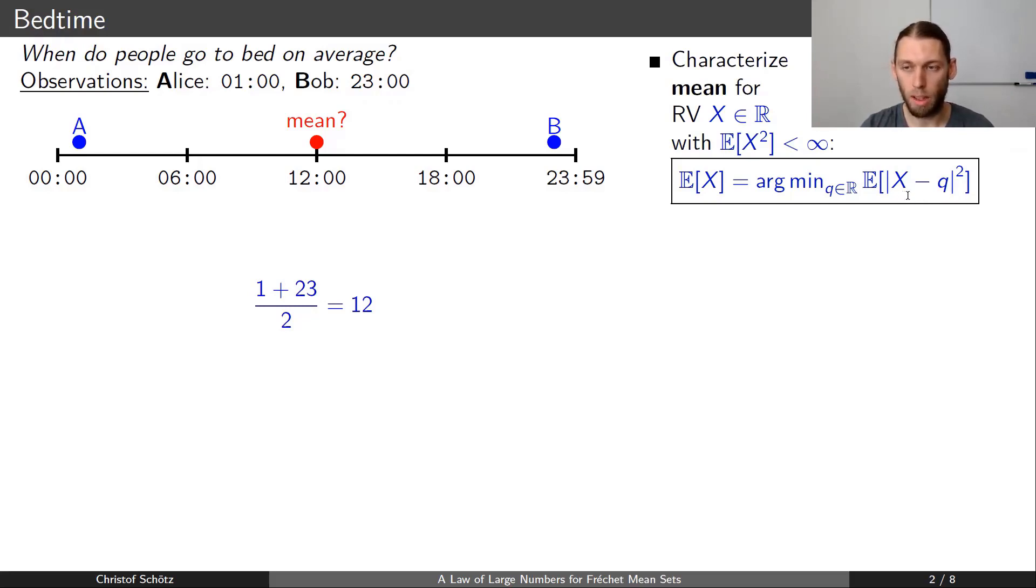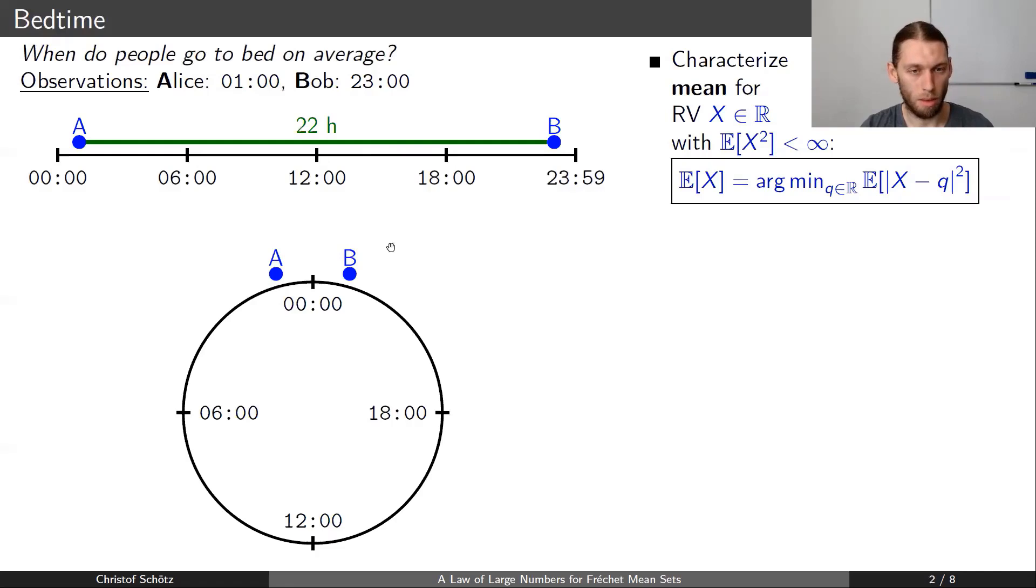And here this distance is the Euclidean distance, and applying this Euclidean distance on the left hand side is to say that the distance between a, one hour after midnight, and b, one hour before midnight, is 22 hours. This seems to be wrong somehow because we would say something different—we would say well, time of day lives on a circle basically, and then the distance between a and b is two hours.